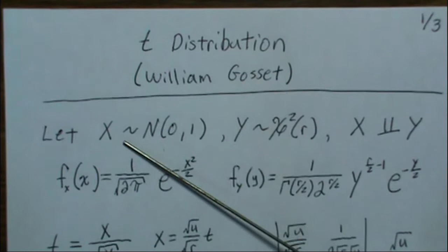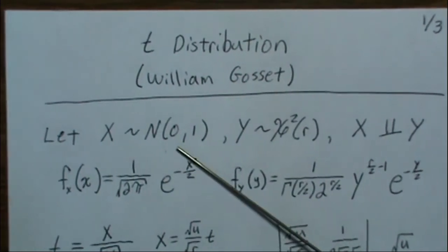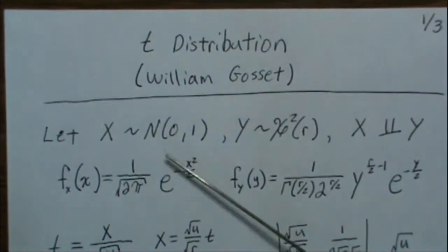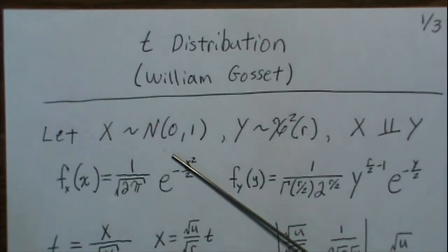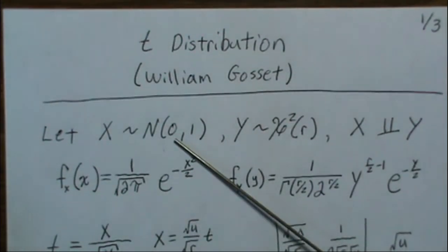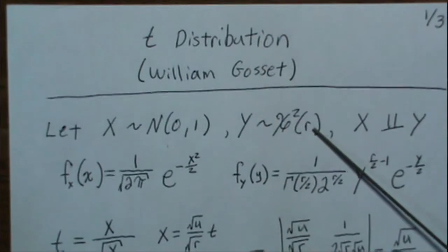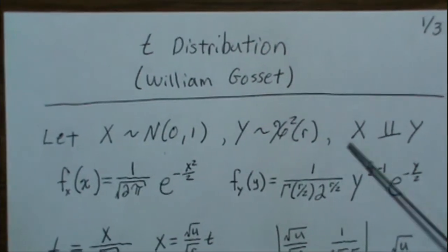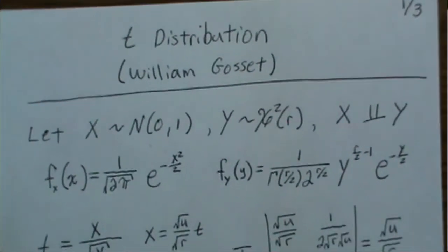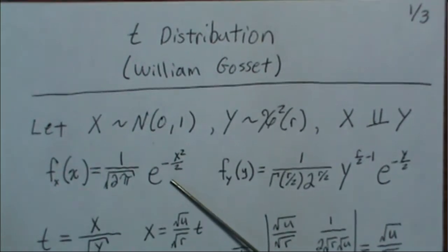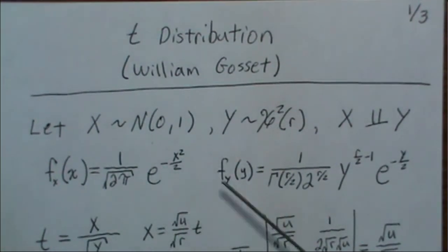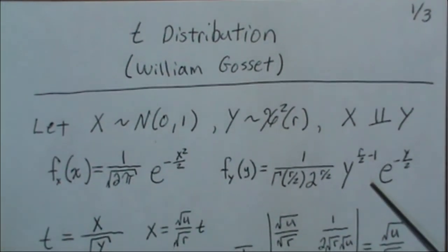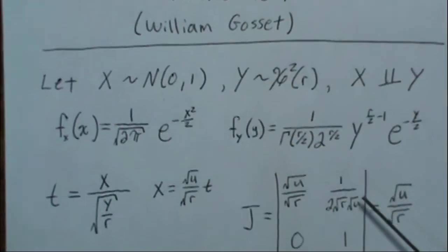To derive the t-distribution, we first have to collect a sample from normal distribution or let this variable be a normal distribution. Standard normal means 0 mean and 1 variance, and Y be a chi-squared with r degrees of freedom. X and Y need to be independent. The densities for a standard normal distribution is this, and this is the density of a chi-squared with r degrees of freedom.